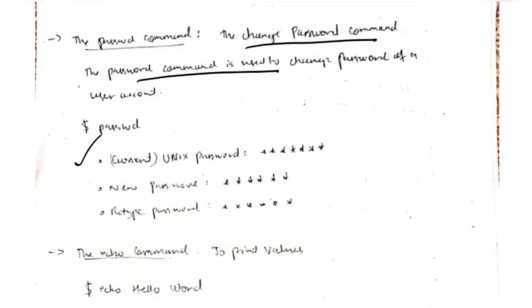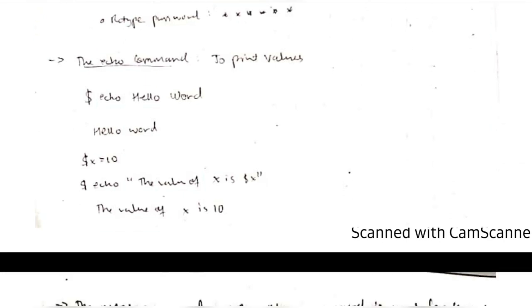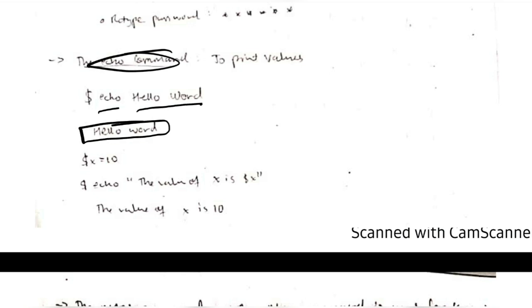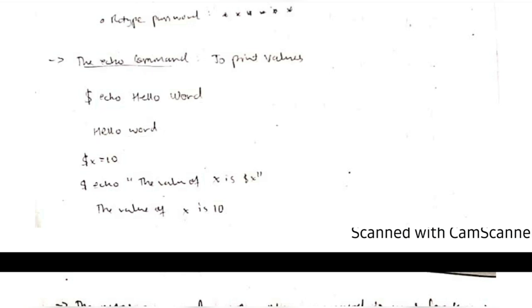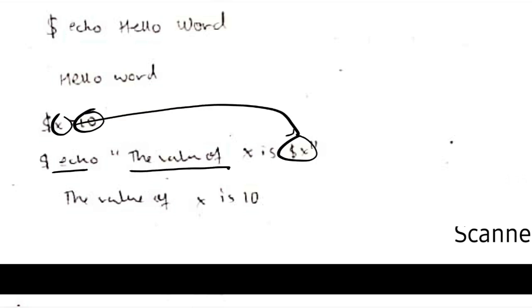The password command is used to change the password. The current password will be taken, then the new password will be taken and retyped — same as how we do for accounts. The echo command is used to print values. Like if I write 'echo hello world', the output will be 'hello world'. We can use that for variables as well — if I write x equals 10 and then echo the value of x using the variable, it will print 'the value of x is 10'.